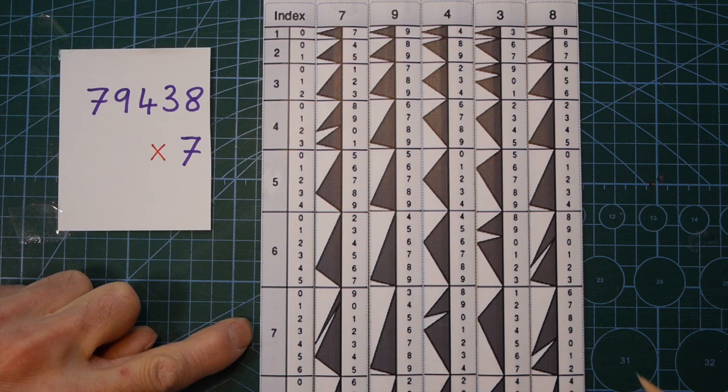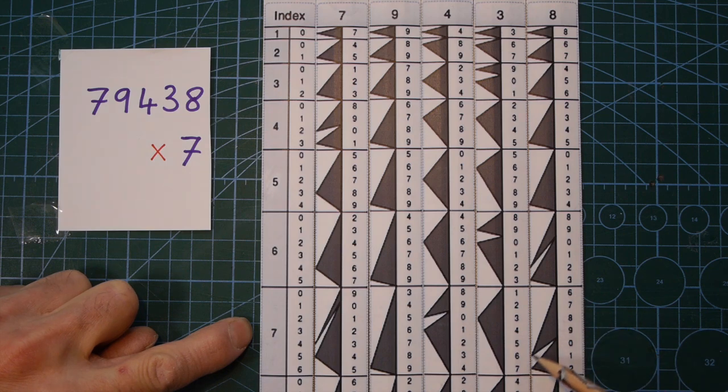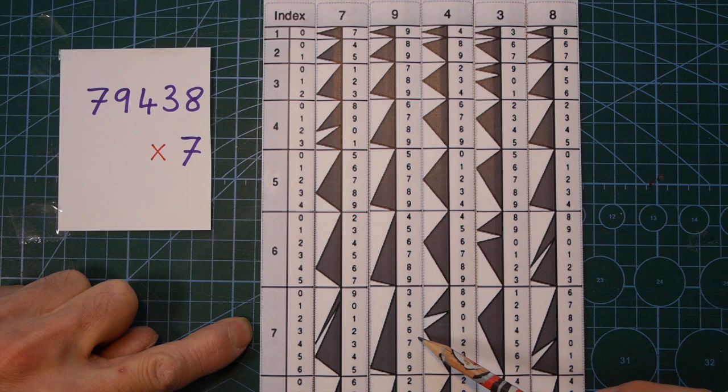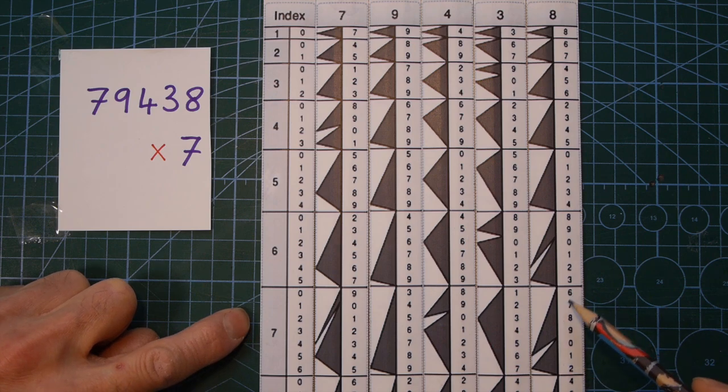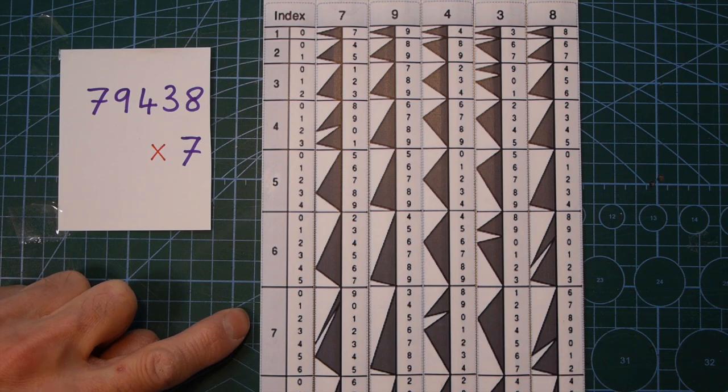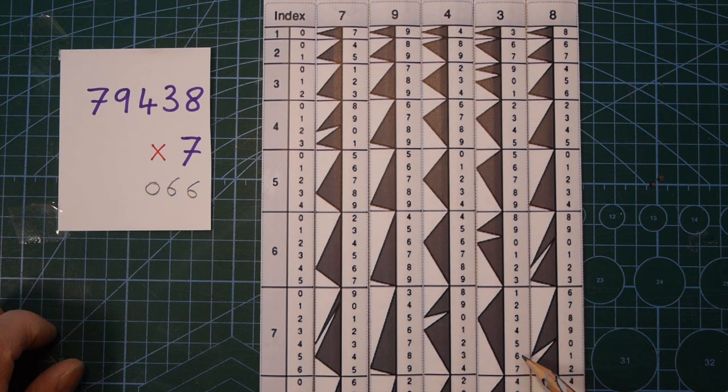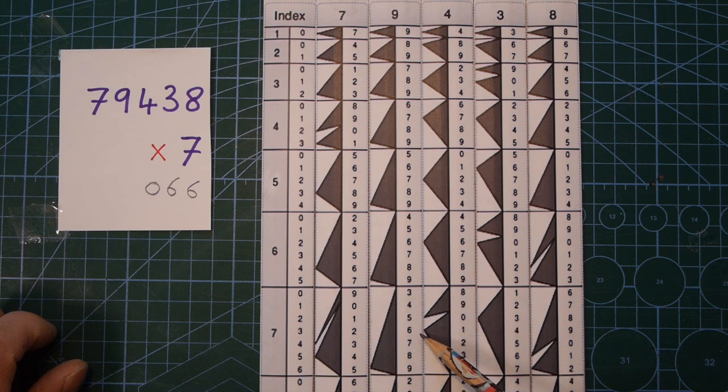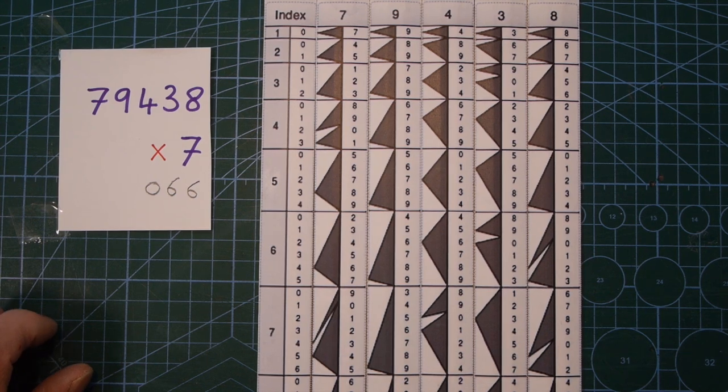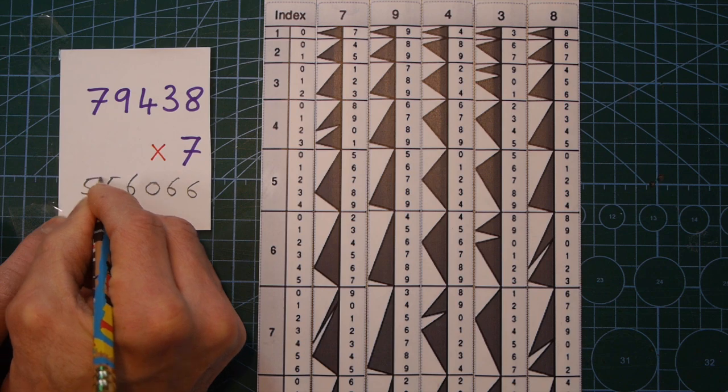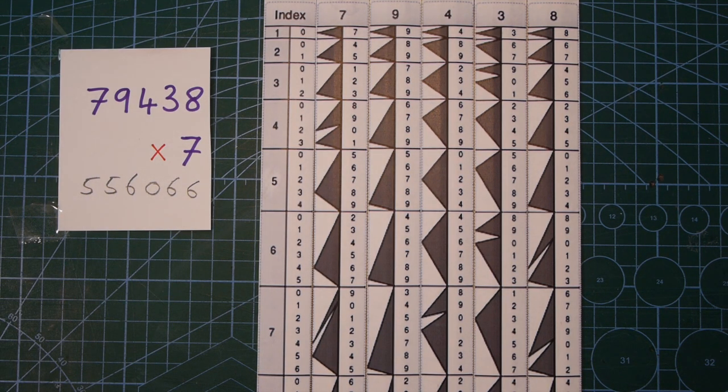So, if you remember, the way we do it is go right the way across to this side on the 7 row. Take the first number, which is 6. Follow the other arrow down here. This arrow to 6. Follow it up to 0. Then follow that arrow across to 6. And this arrow across to 5. And then this arrow across to 5. So, I'll now write that down. So, we've got 6, 6, 0. So, remember, it's 6, 6, 0. So, I'll follow that again. 6, 6, 0. And then that points to a 6, 5. And this arrow points to a 5. 6, 5, 5. So, 79,438 times 7 is 556,066.